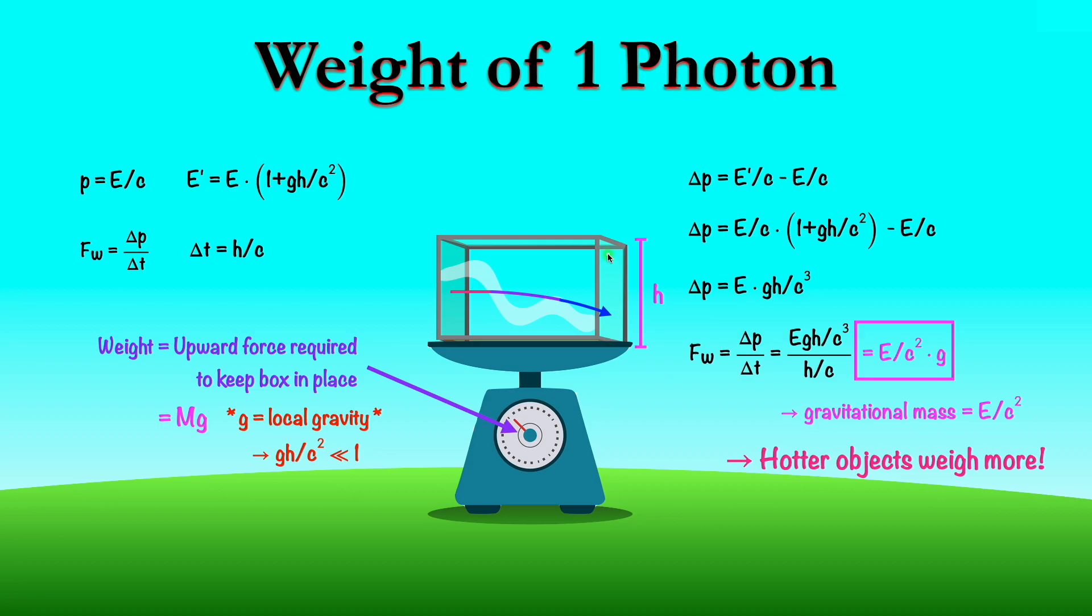And we've assumed here that the gravitational field is constant. So you would have to have a box that was extremely thin, such that the instrument you're using, or the scale you're using, would detect this extra E over c squared times g in its weight without detecting the change in the gravitational acceleration across the very tiny height of the box. So for a macroscopic object that we're used to, it'd be very difficult to measure this. I don't think it's ever been done. If you know of an experiment where that's been done, please let me know in the comments.